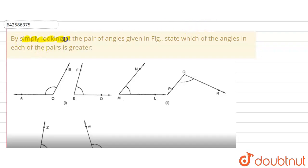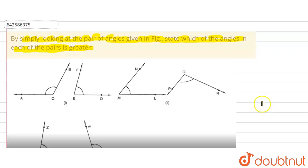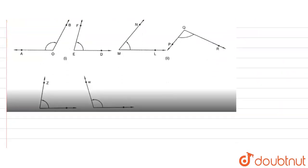The question is: by simply looking at the pair of angles given in the figure, state which of the angles in each of the pairs is greater. In this question we have been given six figures and we have to identify which angle is greater from the pairs.